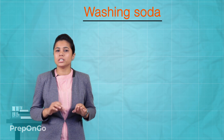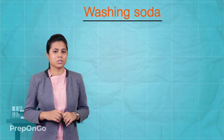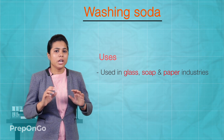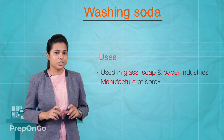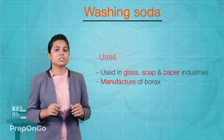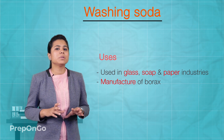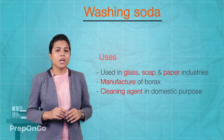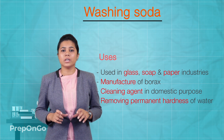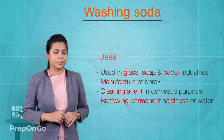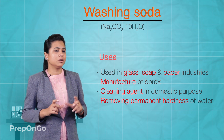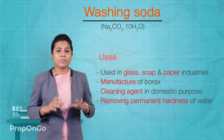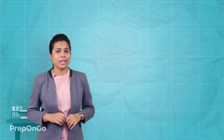As the name suggests, washing soda is mainly used for cleaning purposes. Sodium carbonate is used in the glass, soap, and paper industries. It is also used in the manufacturing of sodium compounds such as borax, and as a cleaning agent for domestic purposes. It is also used for removing permanent hardness of water. You must be noticing the dot 10 H₂O — what does it signify? We will find out in our next video.